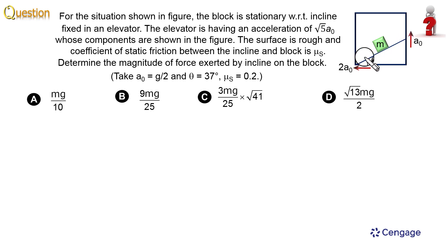The surface is rough and the coefficient of friction between the incline and block is given as μₛ. We need to calculate the magnitude of the force exerted by incline on the block. We are given a₀ = g/2, the inclination of this inclined plane with the horizontal is θ = 37°, μₛ = 0.2, and we are given four options.